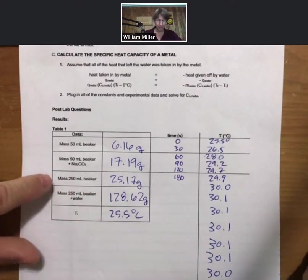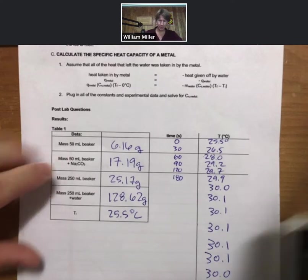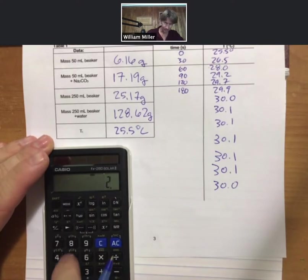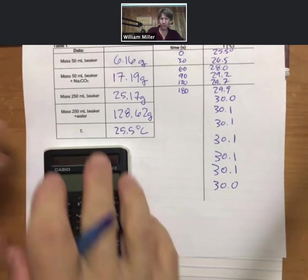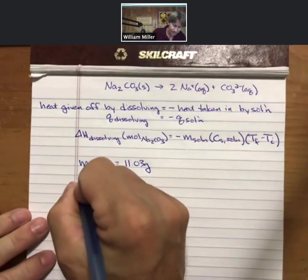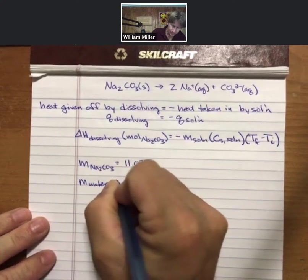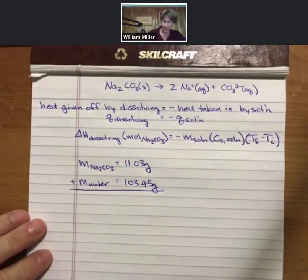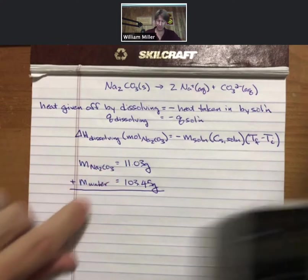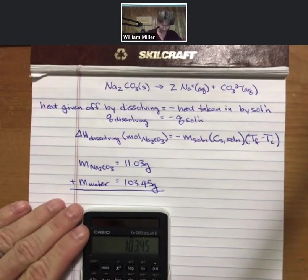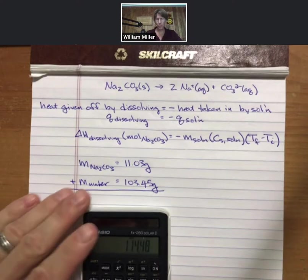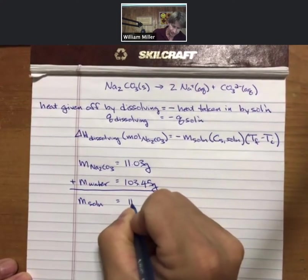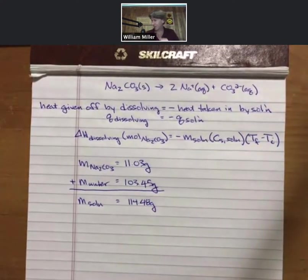The mass of water is beaker-plus-water minus beaker, which gives 103.45 grams of water. Therefore, my mass of solution is the sum of the mass of sodium carbonate and mass of water: 114.48 grams. So we now have our mass of solution.